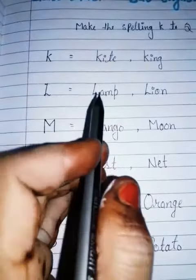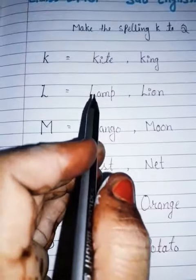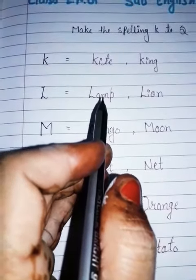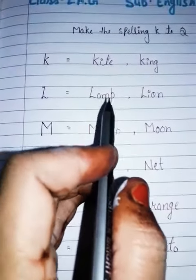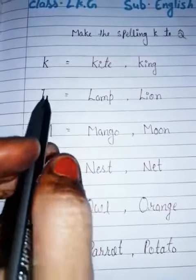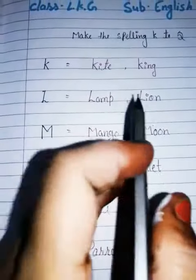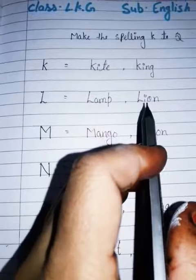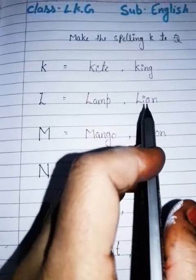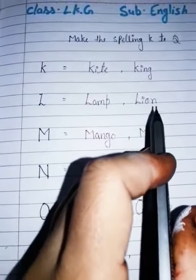L. L for lamp, L-A-M-P, lamp. L. L for lion, L-I-O-N, lion.